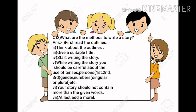Now I have written some steps about how to write a story. The first step is: first, read the outlines. Number two: think about the outlines — think about what is written in them. Number three: give a suitable title that is related with the story. Number four: start writing the story. Number five: while writing, be careful about the use of tenses, persons — whether first, second, or third person — gender, and numbers, whether singular or plural.